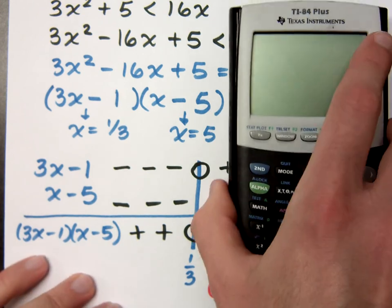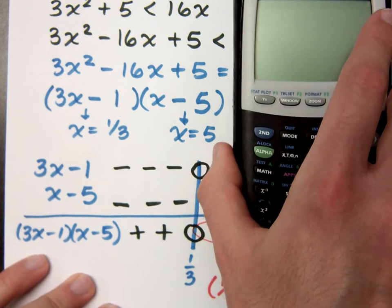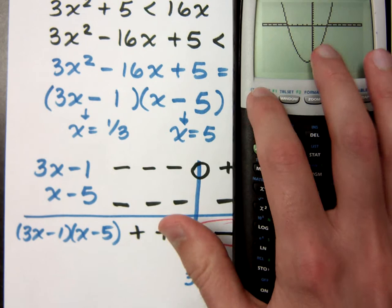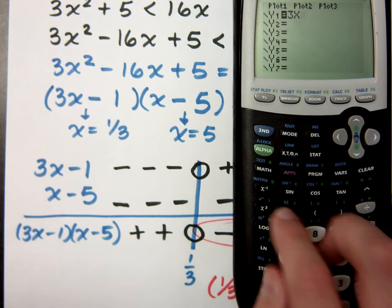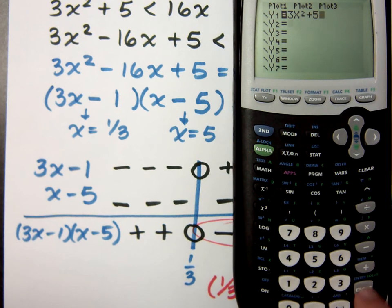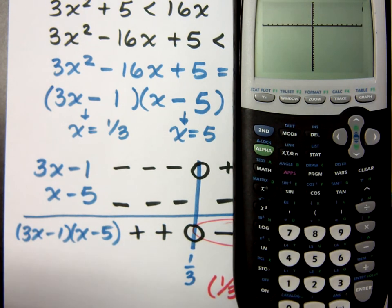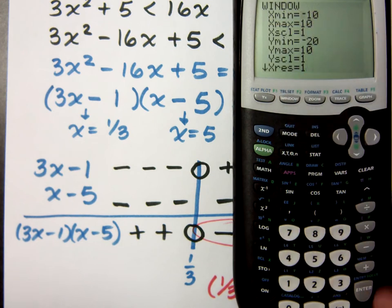Now, we can check this by graphing. This is one of the great things we have here. Now, I'm going to go back and look at my original guy. One equation is 3x² + 5, and the other guy is 16x. Now, I don't think I'm going to get much help here, so we need to change the window.